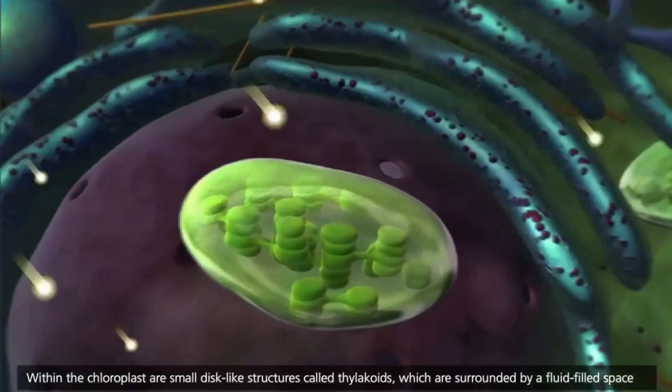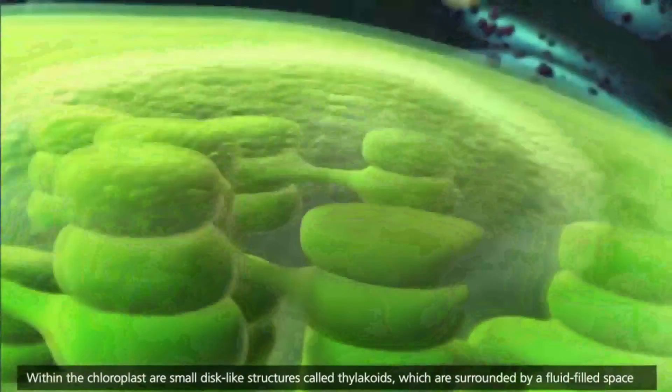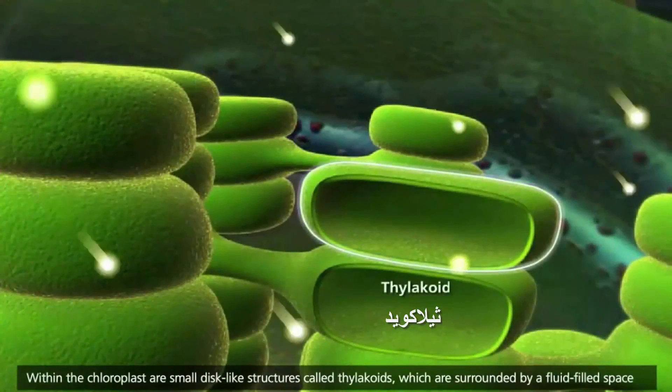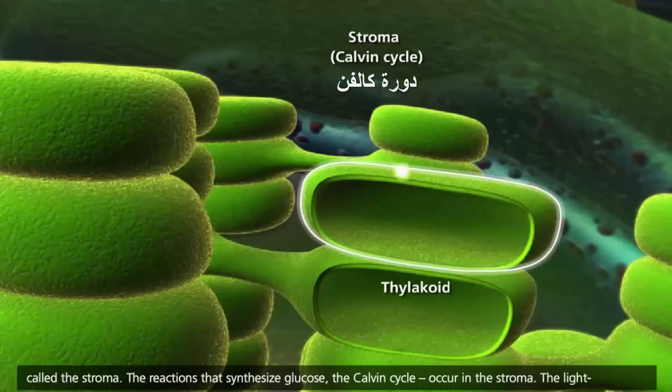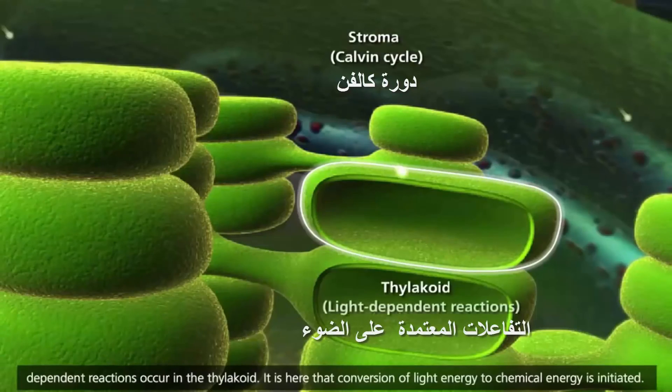Within the chloroplast are small disc-like structures called thylakoids, which are surrounded by a fluid-filled space called the stroma. The reactions that synthesize glucose, the Calvin cycle, occur in the stroma. The light-dependent reactions occur in the thylakoid.